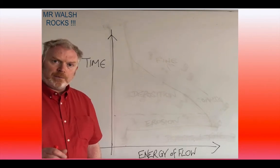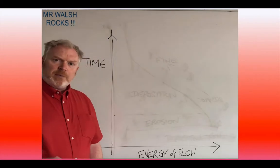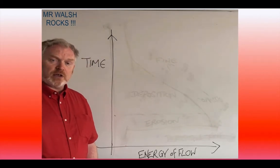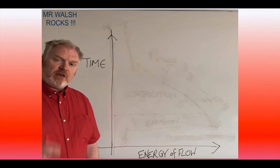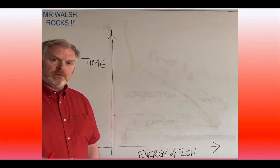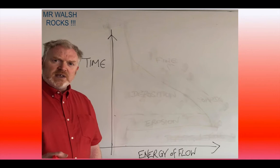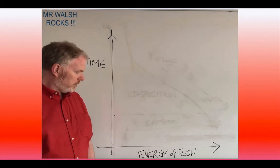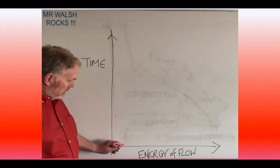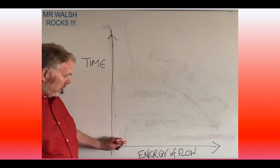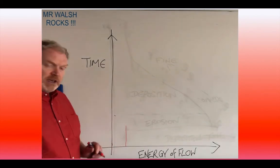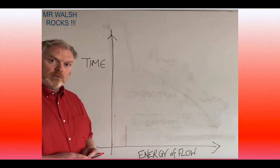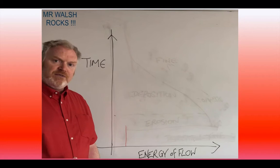If we think about the deep ocean environment where we find turbidity currents occurring, generally that's a very low energy environment. A turbidity flow is an anomaly in that type of environment. So generally the energy levels are going to be very low until a turbidity flow occurs.